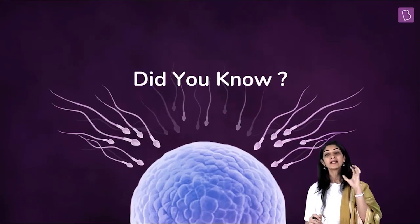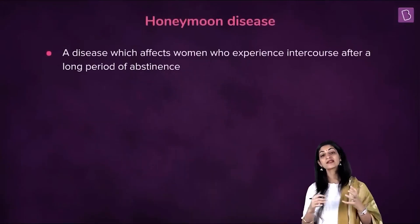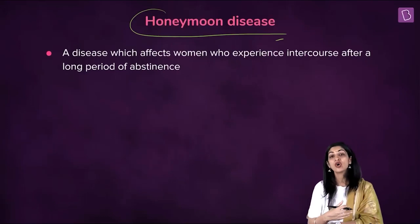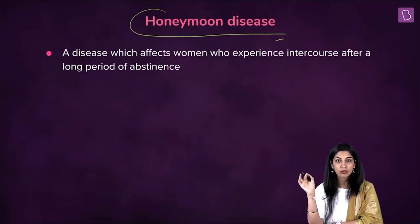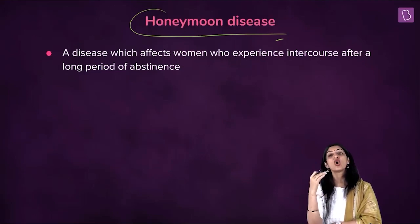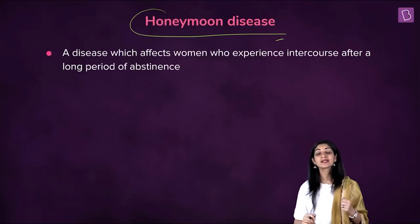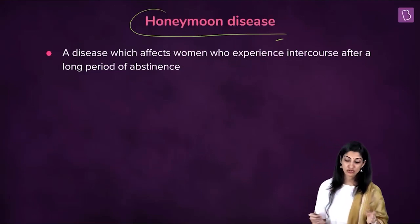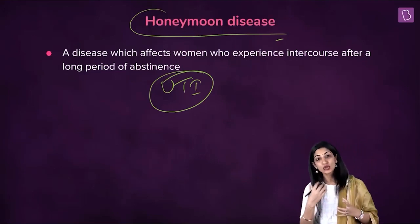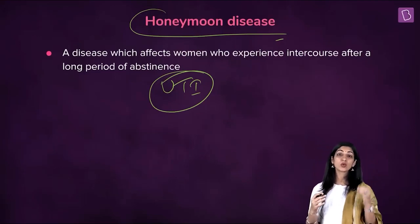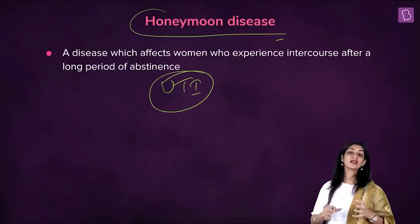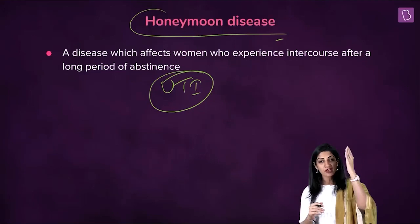Now we will apply the concept of close proximity. There is a very common condition called honeymoon disease, seen in females. It is assumed that during a honeymoon, or after a long period of abstinence, it is very common for females to catch urinary tract infections — UTIs. One of the major reasons females catch UTIs so commonly is the close proximity of the anus, urethral orifice, and vagina — everything is in a line, very close together.